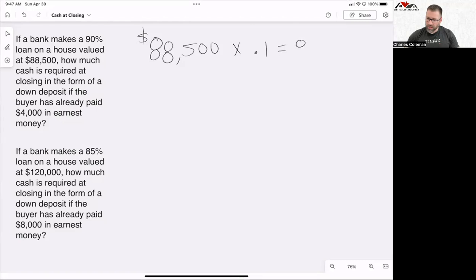So $88,500 times 0.1, and that is going to give you $8,850. Perfect. So that's how much money the buyer has to bring to the closing table.